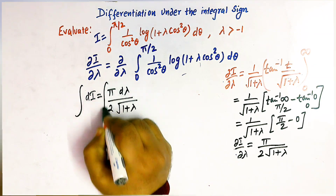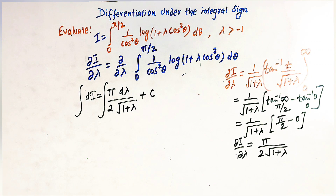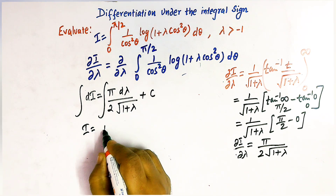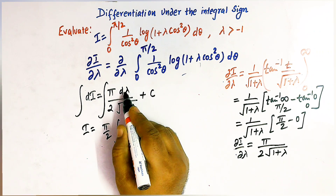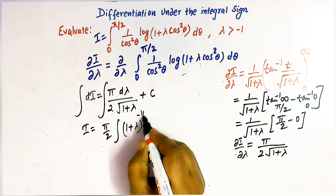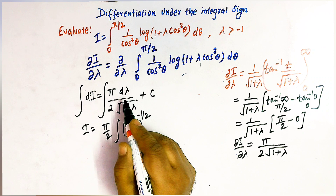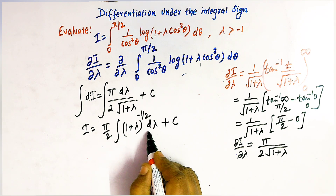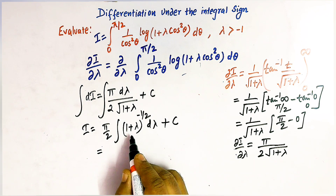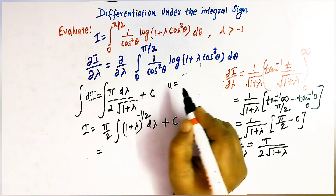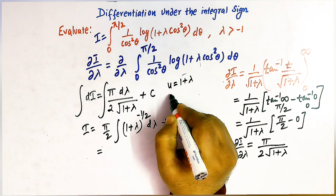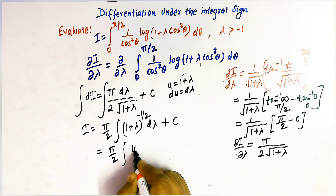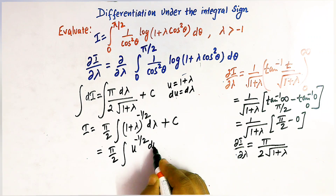Integrating both sides with constant of integration c: i = (π/2)·∫(1+λ)^(−1/2) dλ + c. We use the substitution u = 1 + λ so that du = dλ, giving i = (π/2)·∫ u^(−1/2) du + c.